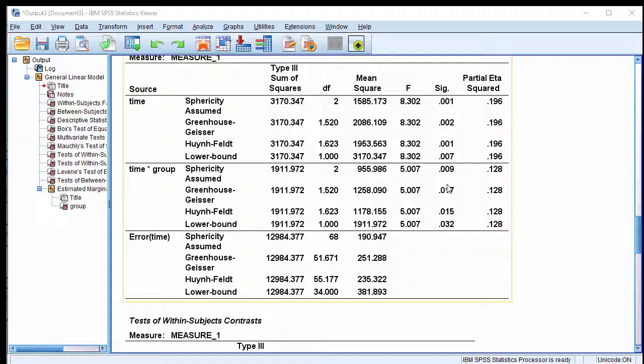This is a 2x3 mixed design ANOVA, and the interaction effect was identified as statistically significant with an f of 5.007, p equal 0.009, or 0.015 if you consult the Huynh-Feldt adjustment, and the partial eta squared is equal to 0.128.